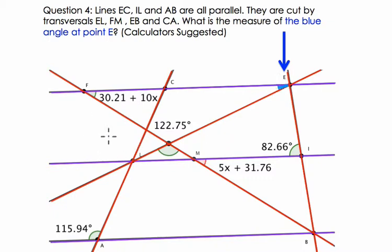Okay, so what do we do here? Well, look at what's given here. I see we've got 122.75 degrees. That's this angle, and we've got 82.66 degrees over here. 5x plus 31.76 is representing this angle, and 30.21 plus 10x is representing this angle here.